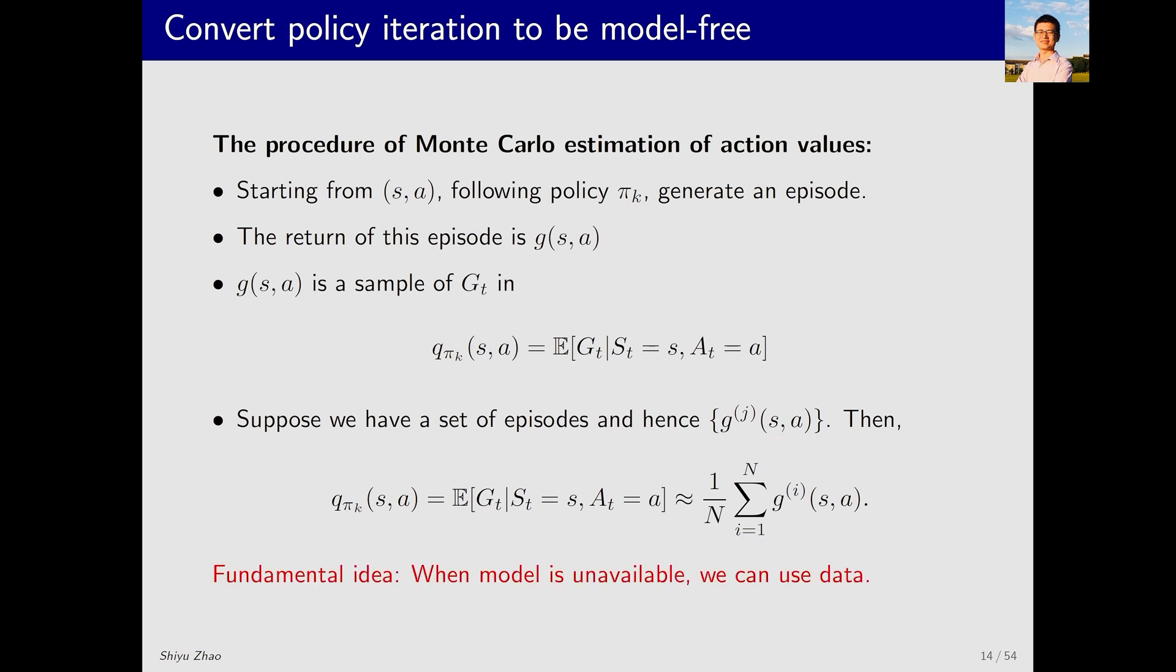In summary, when we don't have a model, we need data. If we don't have data, we need a model. If we have neither, we can do nothing. The idea is very simple. So, without a model, we use data. In statistics or probability theory, these data are called samples. While in reinforcement learning, they have a special name: experience.